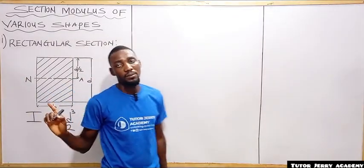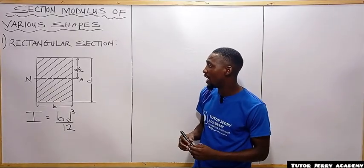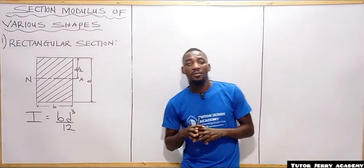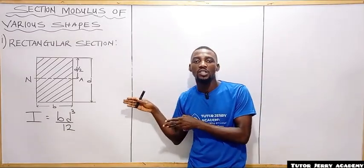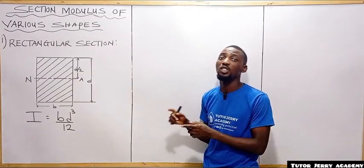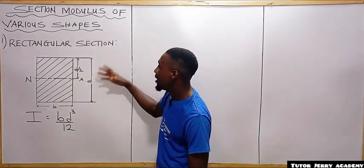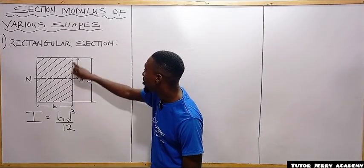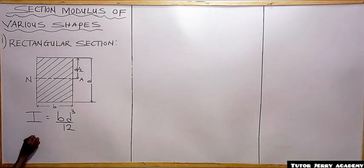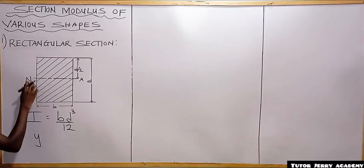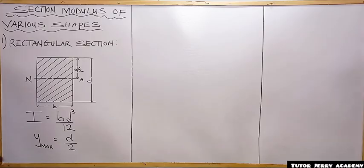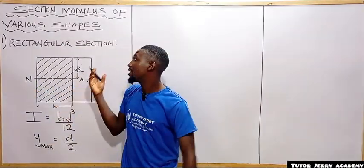The moment of inertia of a rectangular section about the neutral axis is bd³/12. The distance of the outermost layer from the neutral axis is denoted by y_max, and it is always d divided by 2. So y_max, which is the distance from the outermost layer to the neutral axis, equals d divided by 2.